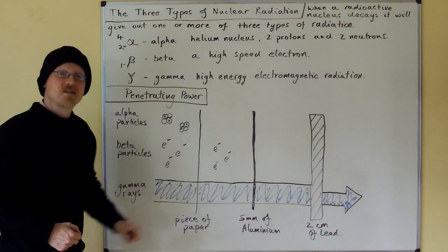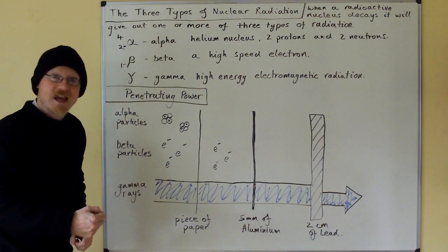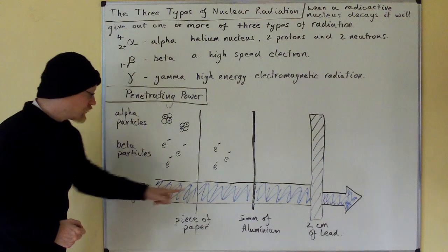Beta particles will get through the piece of paper, provided it's not too thick. Gamma rays go straight through the piece of paper.